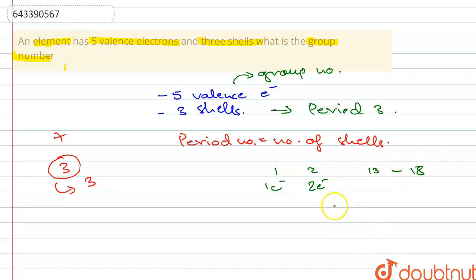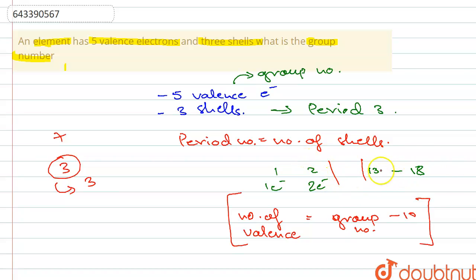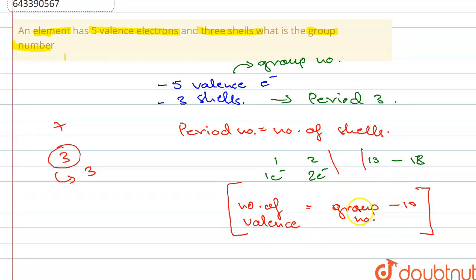For groups 13 to 18, the formula is: number of valence electrons = group number − 10. This is because groups 1 and 2 are s-block elements, groups 13 to 18 are p-block elements, and in between we have d-block elements — that's why there is a jump in group number. Rearranging the formula: group number = 10 + number of valence electrons.